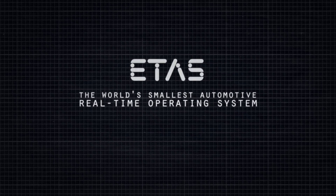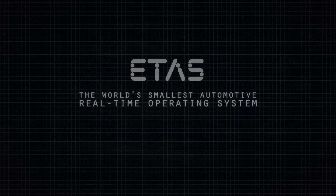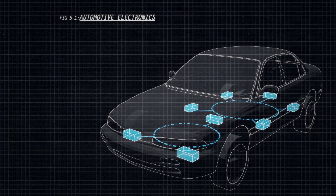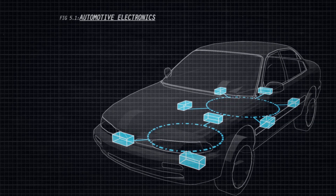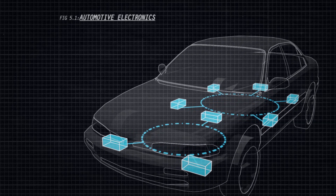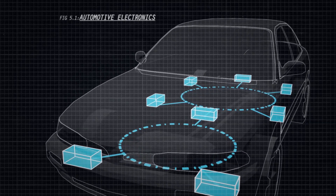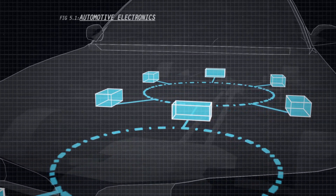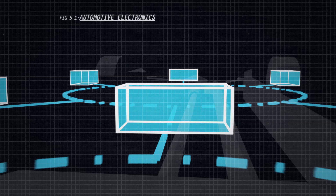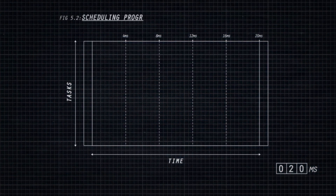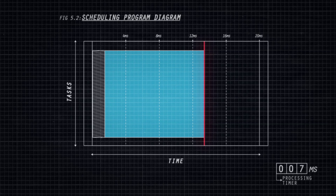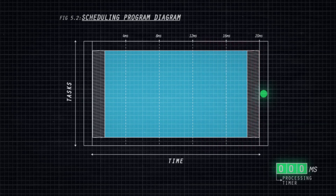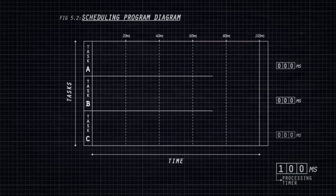In automotive electronics, functionality is provided by multiple software tasks running on individual microprocessors within the electronic control units, or ECUs. For the overall system to behave correctly, every task must meet its time constraints. For example, a task may be required to run every 20 milliseconds, read and process data from sensors, and output its results within a specified deadline.